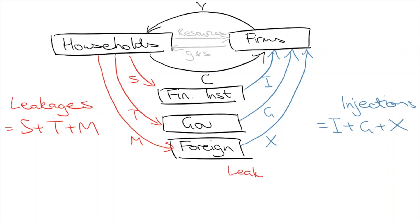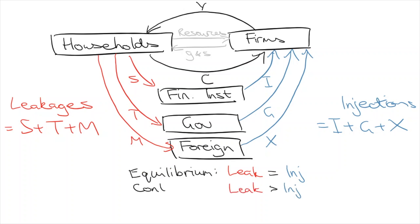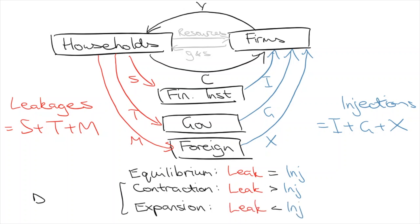When both sides are equal, we call this equilibrium. When they're unequal, we call it disequilibrium. When leakages are greater than injections, the economy will contract. If injections are greater than leakages, the economy will expand.